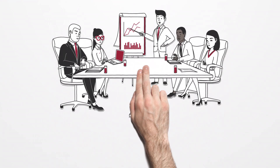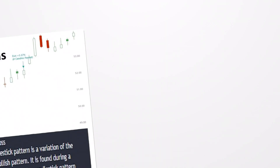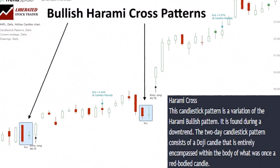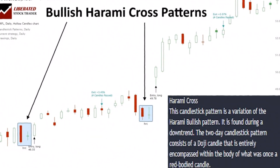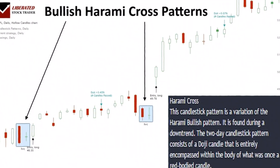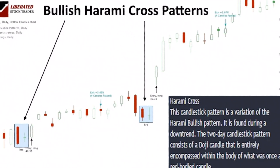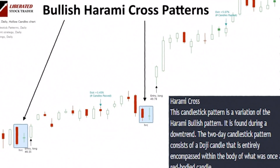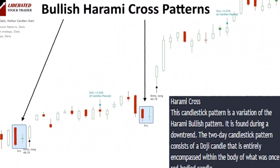For this video's last pattern, let's delve into the bullish harami cross, which is successful in 55.3% of cases. The bullish harami cross pattern signals a possible end to a bearish trend and the commencement of a bullish trend. While the first candle is a bearish pattern with a significant move down, the second candle is usually a spinning top or doji, meaning the open and close prices are similar and still contained within the bounds of the first candle.